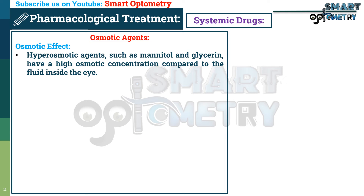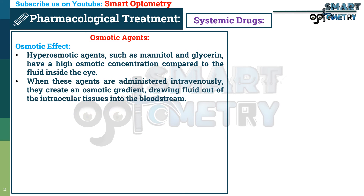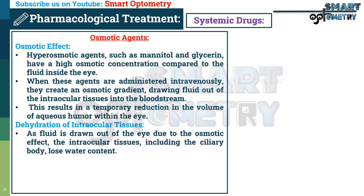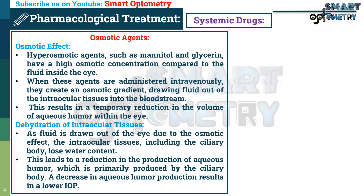Regarding osmotic agents — hyperosmotic agents such as mannitol and glycerin have a high osmotic concentration compared to fluid inside the eye. When administered intravenously, they create an osmotic gradient, drawing fluid out of the intraocular tissues into the bloodstream. This results in a temporary reduction in the volume of aqueous humor. As fluid is drawn out due to the osmotic effect, the intraocular tissues, including the ciliary body, lose water content, leading to a reduction in aqueous humor production and lower IOP.